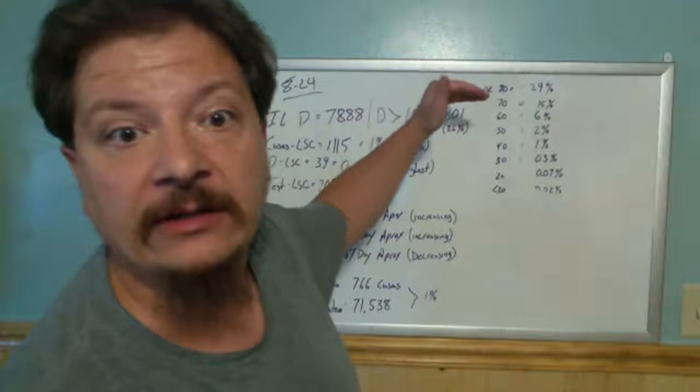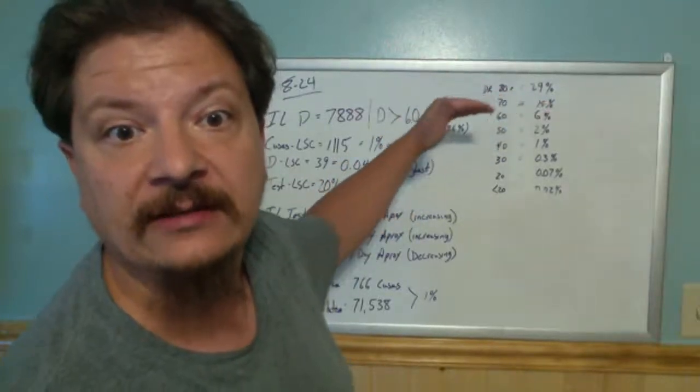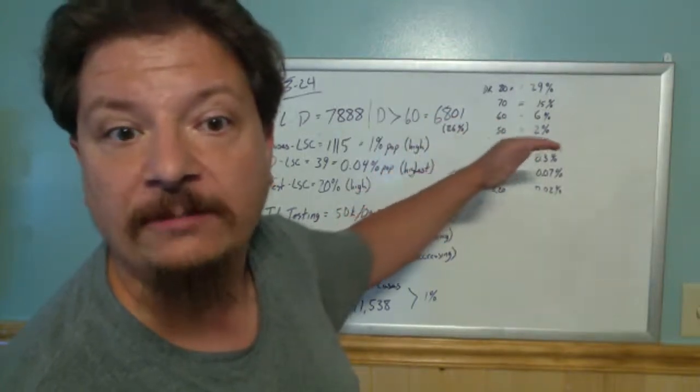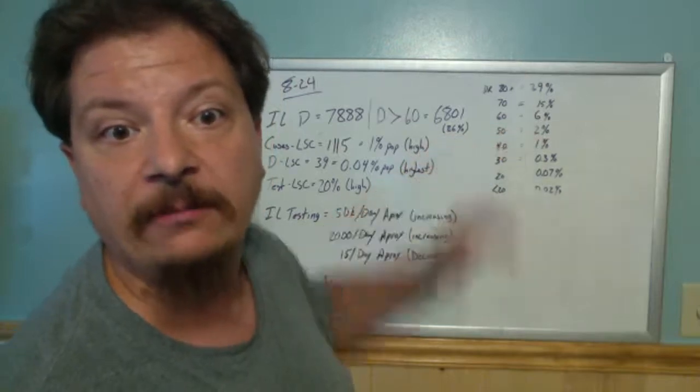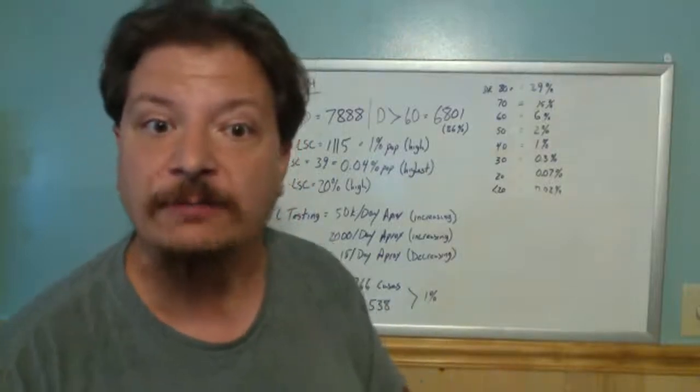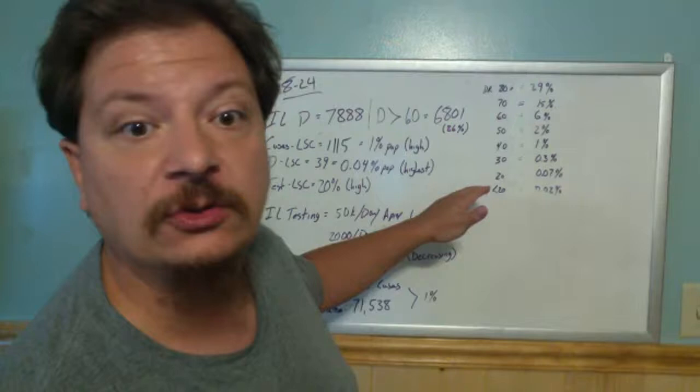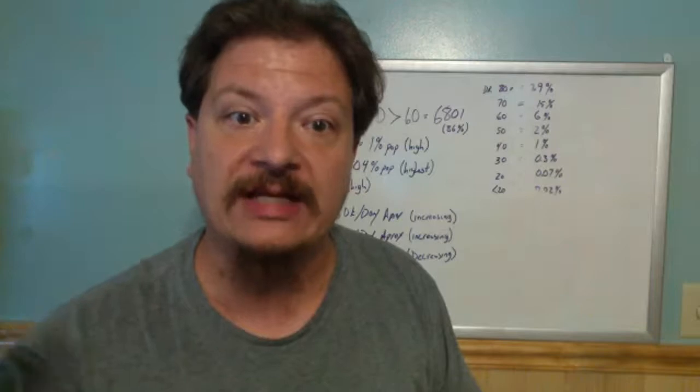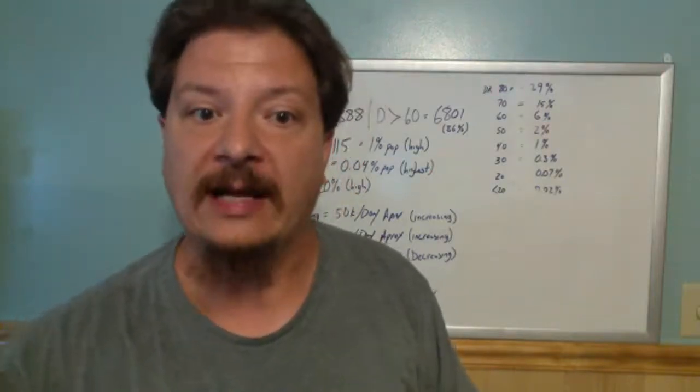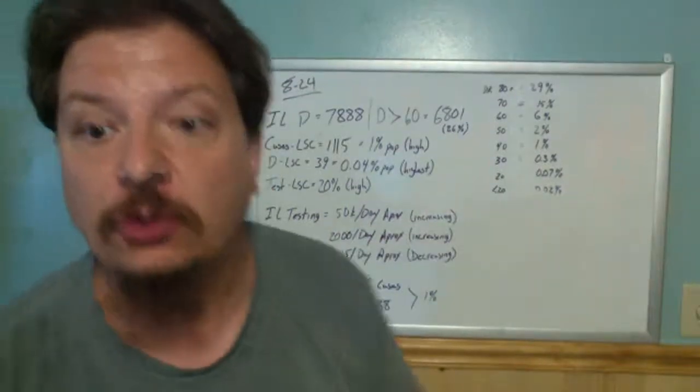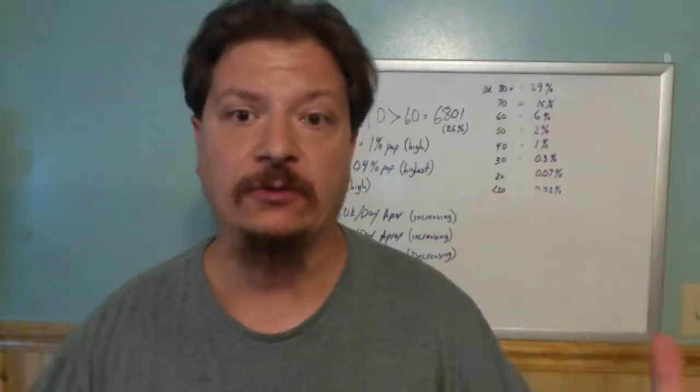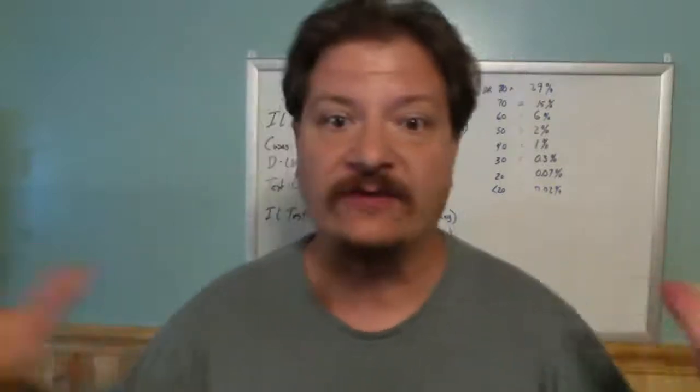I want you to notice what happens very quickly as we get down in age. 70, it drops to 15%, 60 to 6%. If you're in your 50s, it's 2%. If you're in your 40s, like me, it's 1%. By the time you get down to 30s, we're talking about 0.3%. That's three out of 1,000. People in their 20s, we're looking at a 0.07% chance. So of those who are in their 20s who test positive, only 0.07%, 7 out of 10,000 of those will end in death. When you get even lower, it goes down to 0.02%. So one of the things we see is that this is very much something that is broken down by age group.